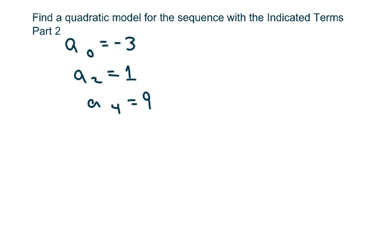Hi, everyone. We're going to find a quadratic model for the sequence with the indicated terms here. So these are my nth terms. And my model is going to be an² plus bn plus c. That's my quadratic model.